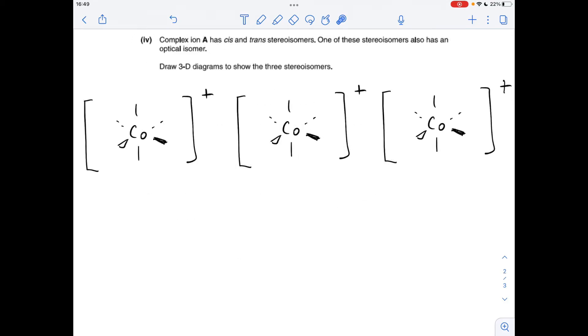We're moving on to the 3D diagrams now to show the three stereoisomers. I've already drawn up the empty octahedra. The first isomer I'm going to draw is the trans one, where the chloride ligands are 180 degrees apart. I'm going to put them there—that means the two bidentate ligands are there and there.